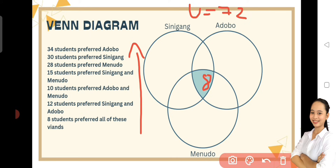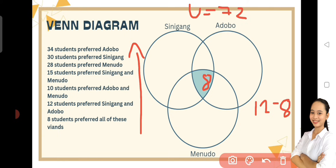Sunod naman yung 12. Yung 12 ba isusulat agad natin sa taas ng 8? Siyempre hindi, kasi yung 8 sakop siya ng bilog ng Sinigang and Adobo. Kaya ang mangyayari ay 12 minus 8 is equals to 4. So, 4 yung intersection ni Sinigang and Adobo.